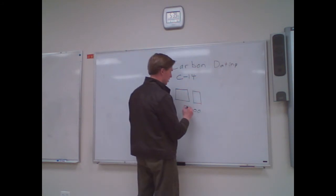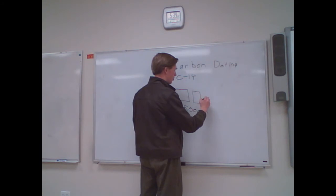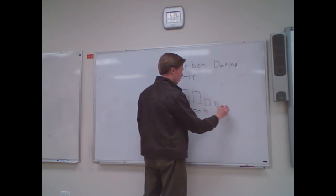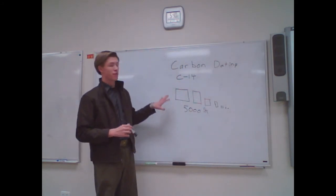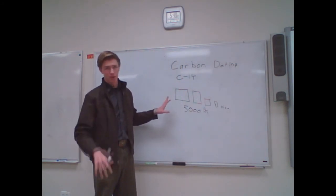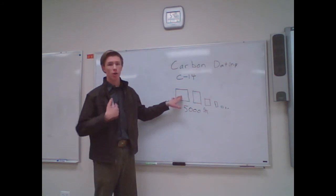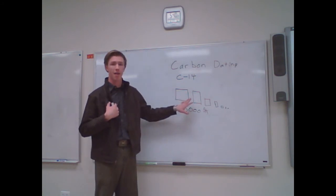Then, after another 5,000 years, so we'll just do 5K right here, it will go to half of that size. There you go. So every 5,000 years, or 5,370 years, the amount of carbon left in us shrinks by half.